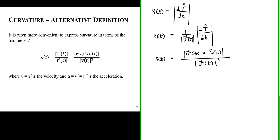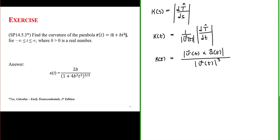This often makes calculation a bit simpler depending on the problem. Let's do an example to exercise what we've just seen. Find the curvature of the parabola given by the position vector r with an x component of t i-hat and a y component of bt² j-hat, for the interval negative infinity to infinity, where b is a positive real number.